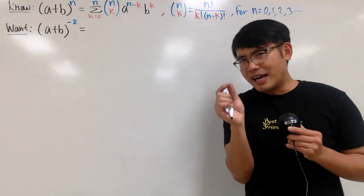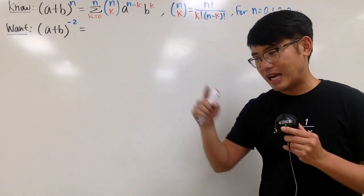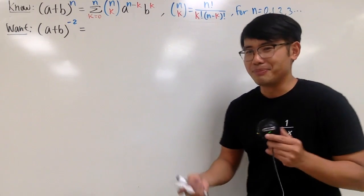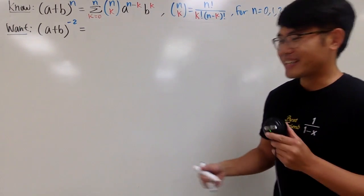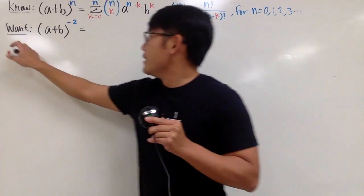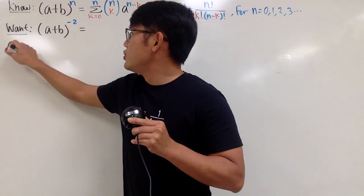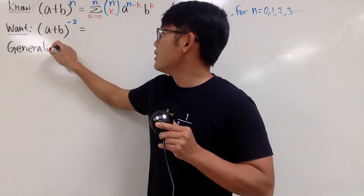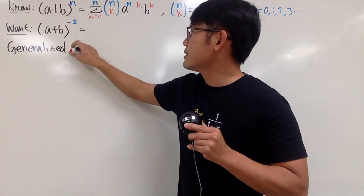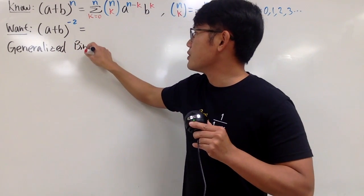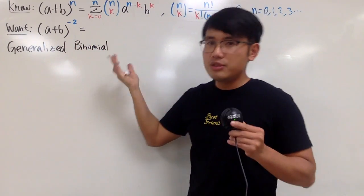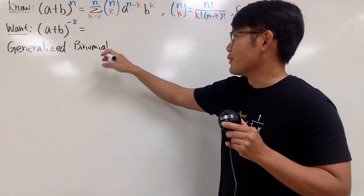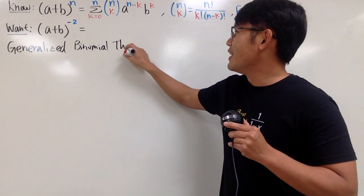There's just some calculus involved because I have to draw the infinity symbol — perhaps that's the only place for the calculus part. Here we go: this is the generalized binomial theorem. Newton came up with this; I'm just showing you guys what he did.